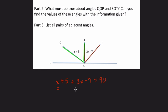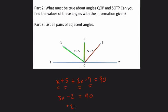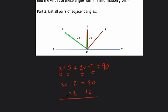So here I combine like terms. X and 2X is 3X, 5 and negative 7 is negative 2, and then we're saying that equals 90 degrees, so I add 2 to both sides. I have to find X, and 3X equals 92.